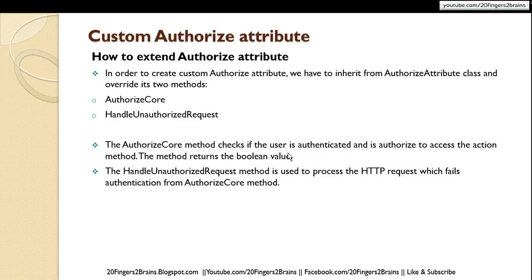The AuthorizeCore method checks if the user is authenticated and is authorized to access the action method. The method returns a boolean value. So basically the main logic of authentication and authorization is done in AuthorizeCore, and the result — true or false — is returned from this function.